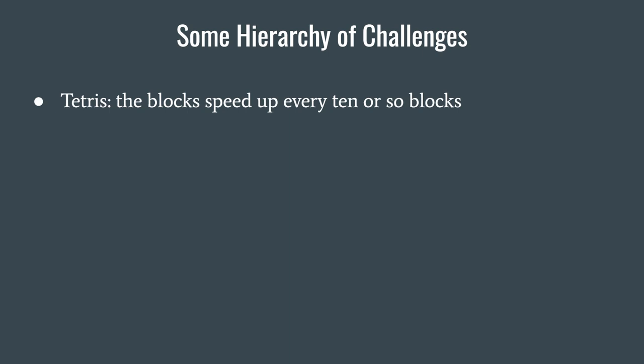Here are some ways different games do levels. One is like Tetris: in Tetris the blocks sped up every ten or so blocks — so every ten blocks that came down the screen, the game got faster. Eventually the blocks were going so fast you couldn't keep up and you'd game over. The hierarchy of challenges was just built into each gameplay session: it starts out really slow, then every ten or so blocks they get faster and faster until it's too fast. That's what made it fun.